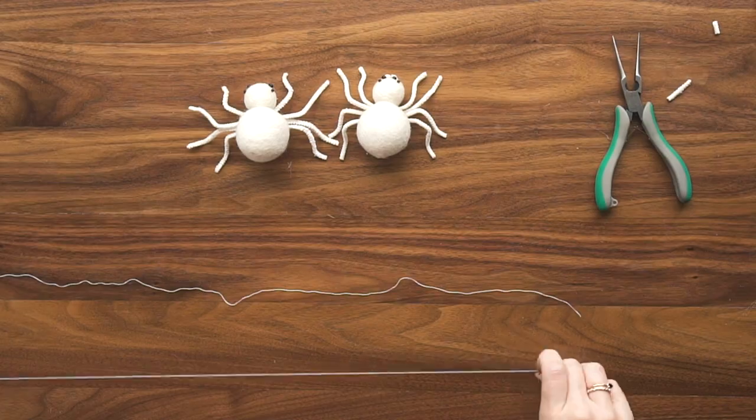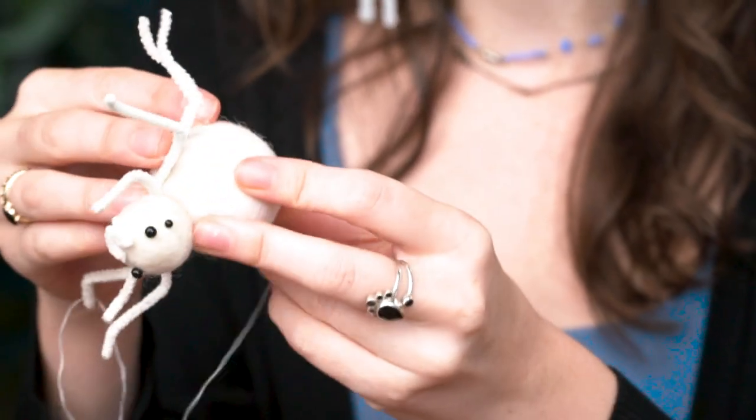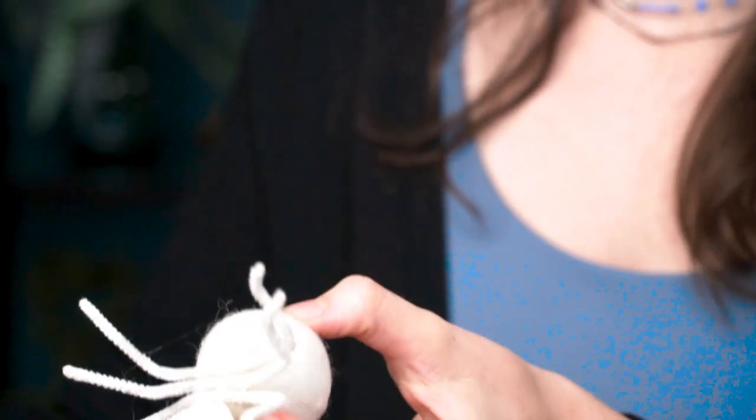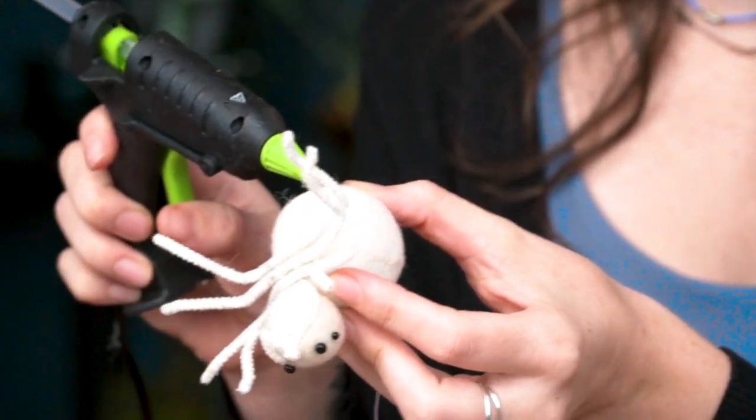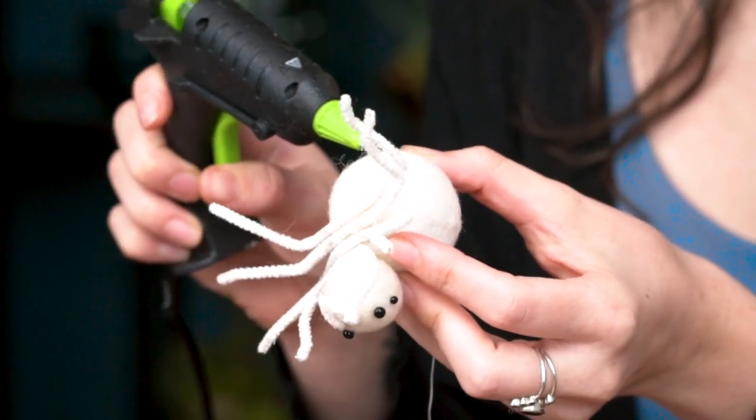I think I'll just glue this right on the booty, so he's hanging down like that. The nice thing about the hot glue is it's clear, so you shouldn't be able to see it too much, especially on this white color.